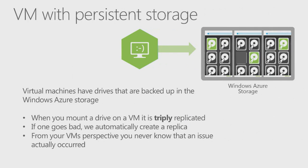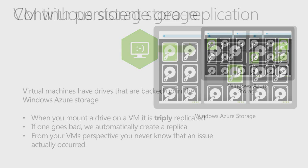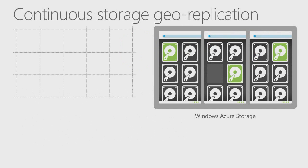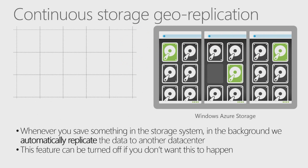When you mount a drive on a virtual machine, it is triply replicated. If one goes bad, Azure automatically creates a replica, and from your virtual machine's perspective it never knows that an issue actually occurred. The mechanism for implementing this is much deeper than we have time to cover in this video, but it is all dependent on Azure storage services.